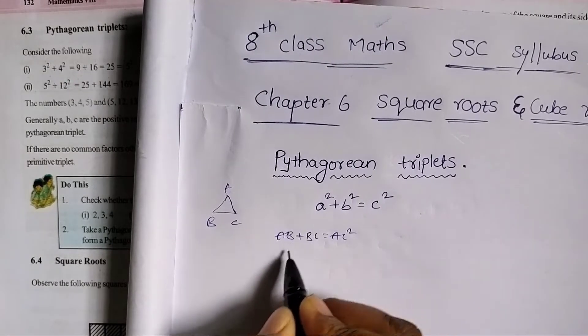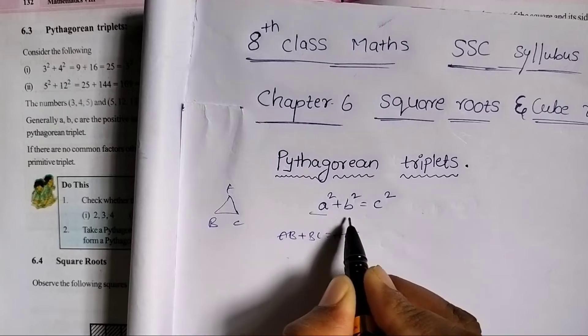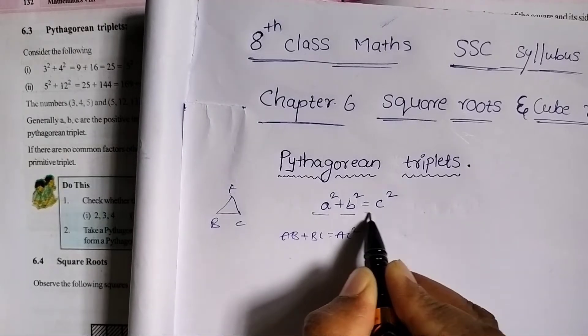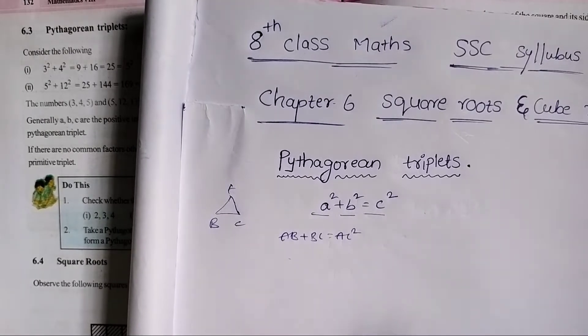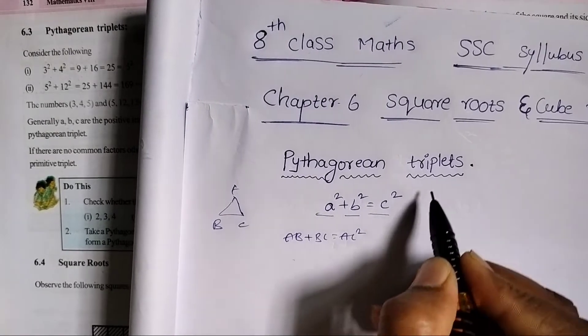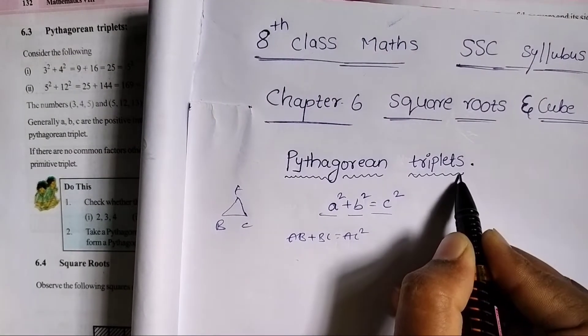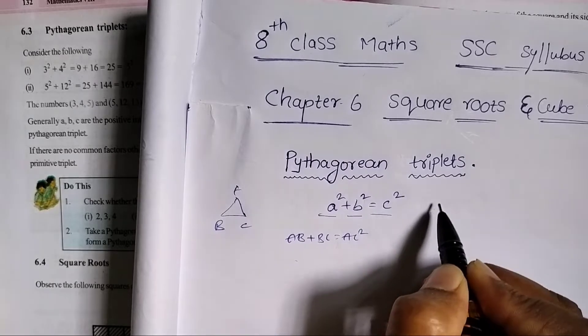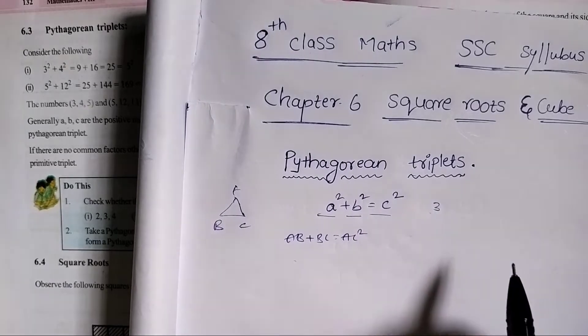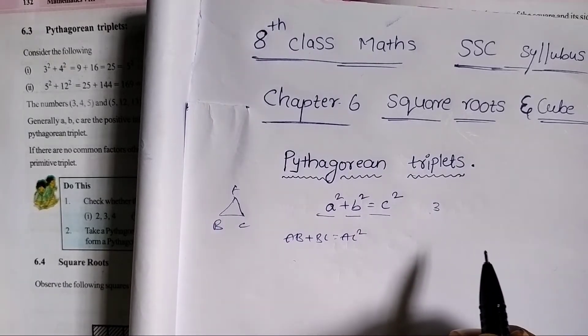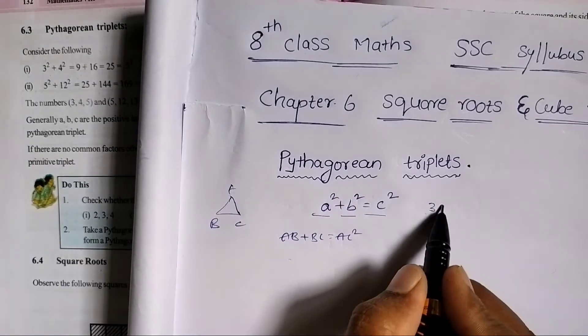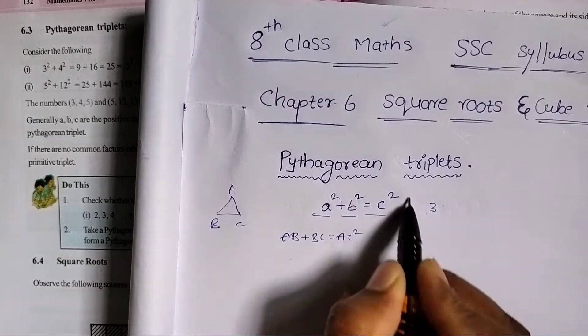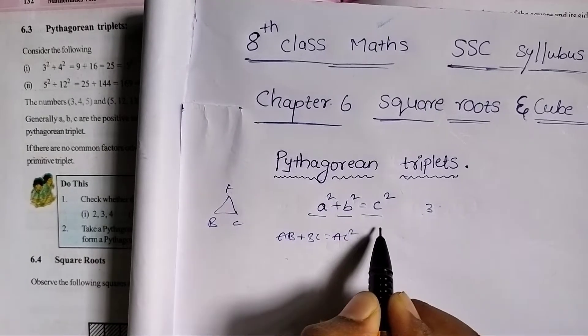A square plus b square is equal to c square. I am going to explain triplets — 'triple' means three. So three numbers that satisfy this condition.